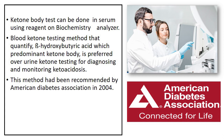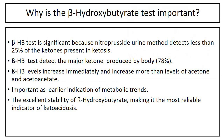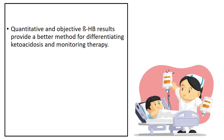Blood ketone testing methods that quantify beta-hydroxybutyric acid, the predominant ketone body, are preferred over urine ketone testing for diagnosing and monitoring ketoacidosis. This method was recommended by the American Diabetes Association in 2004. Beta-hydroxybutyrate testing is significant because the nitroprusside urine method detects less than 25% of the ketones present in ketosis. During ketoacidosis, beta-hydroxybutyrate levels increase immediately and increase more than levels of acetone and acetoacetate, providing an earlier indication of metabolic trends. The excellent stability of beta-hydroxybutyrate makes it the most reliable indicator of ketoacidosis, and quantitative results provide a better method for differentiating ketoacidosis and monitoring therapy.